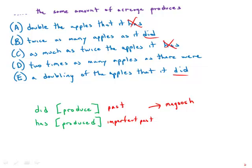So, back to our sentence. We also have, in D, we have a were. So, two times as many apples as there were. And this is particularly unclear.